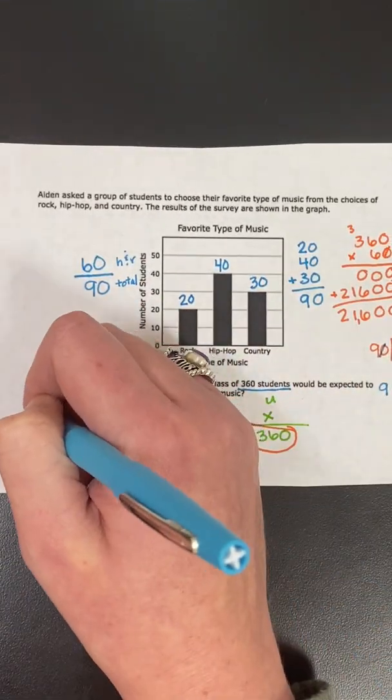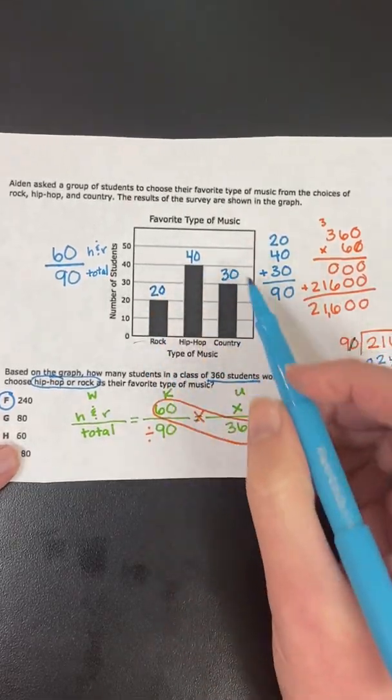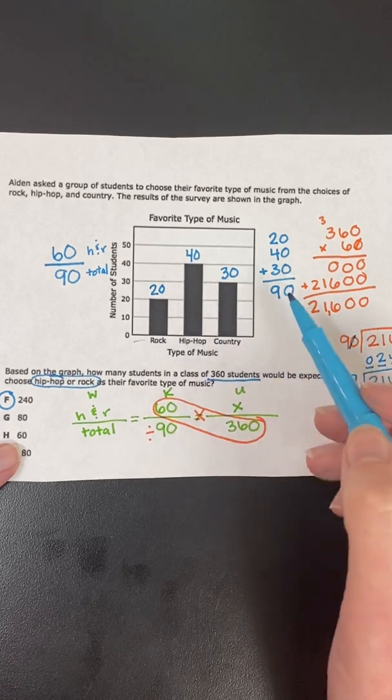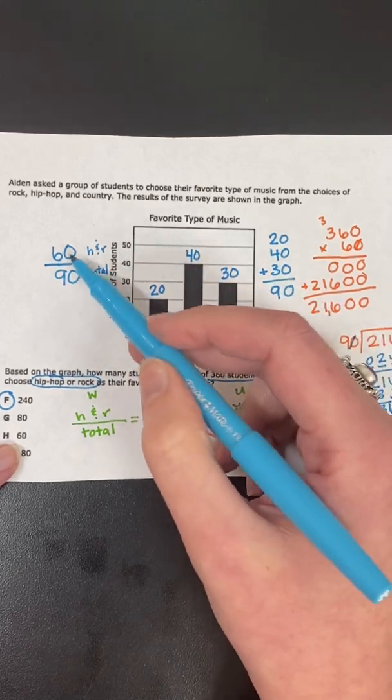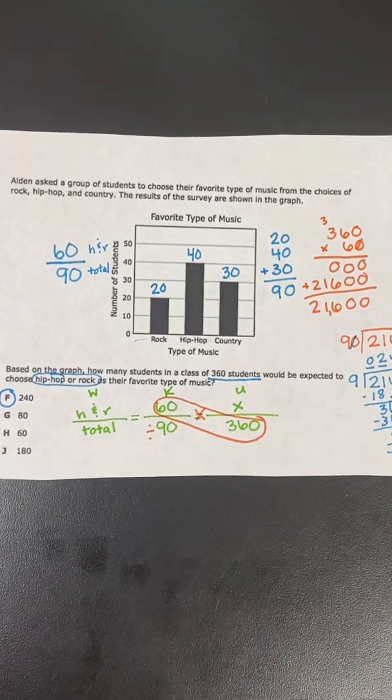So that would be F. So again, when we see a table, make sure you label your bars, add them up, find your total. But that is only for this fraction. If it has another number, you're going to have to set up that WKU.